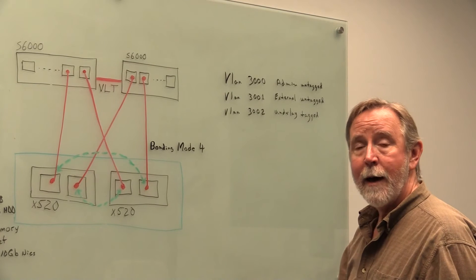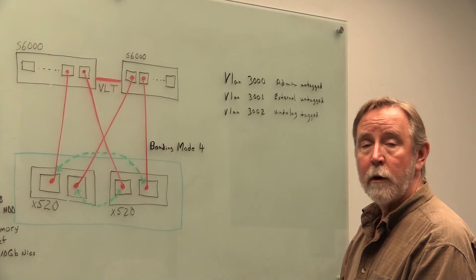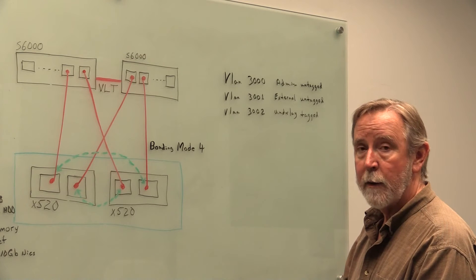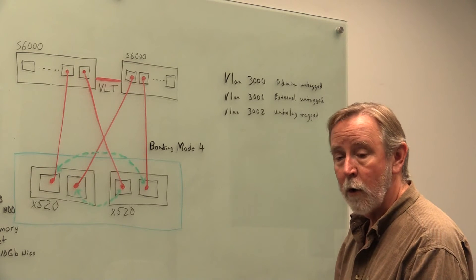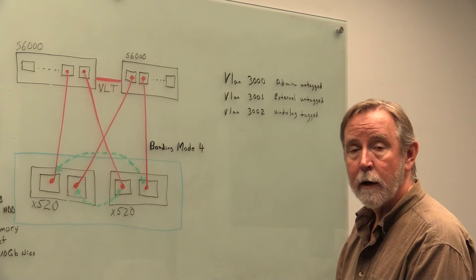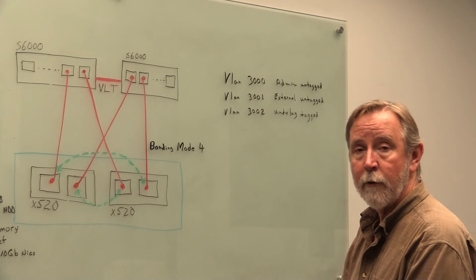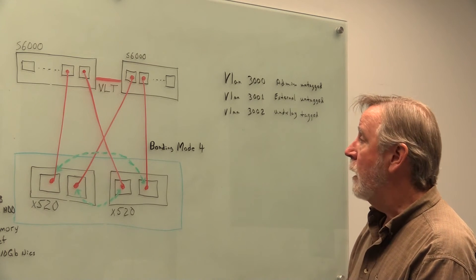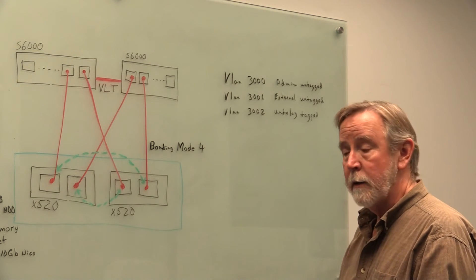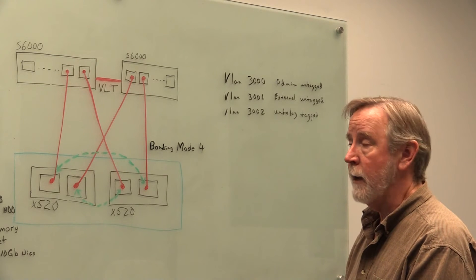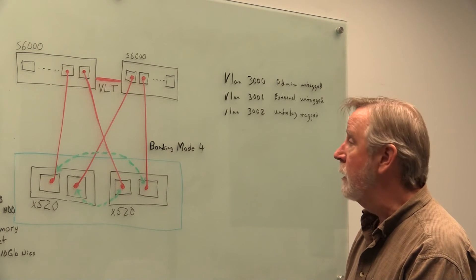Now, you have to have ahead of time some network configuration information. You have to have your IP addresses and what the range of those IP addresses are. You need to know what you're going to name your domain for internally for the Triton setup. There's a checklist on the Joyent website that gives you a great checklist to make sure you go through and you have all that information ahead of time before you actually begin the setup.